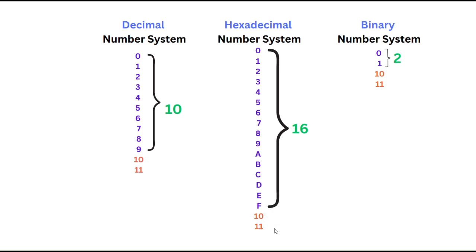Now let's finally go to binary numbers. The word 'binary' comes from 2. In this number system, like we have 10 symbols in decimal and 16 in hexadecimal, in binary we have only two types of symbols: 0 and 1. When we start counting in binary — 0, 1 — the next number requires increasing the digit count, so I write 10, then 11. Once those are consumed I increase the bits again and write 100. We'll see the counting in detail shortly.